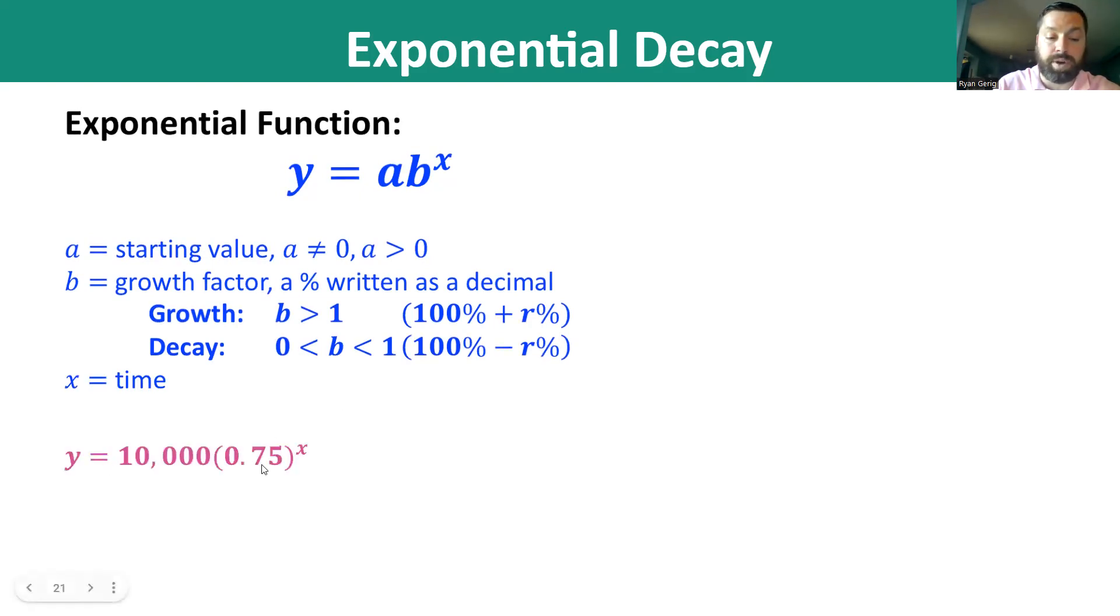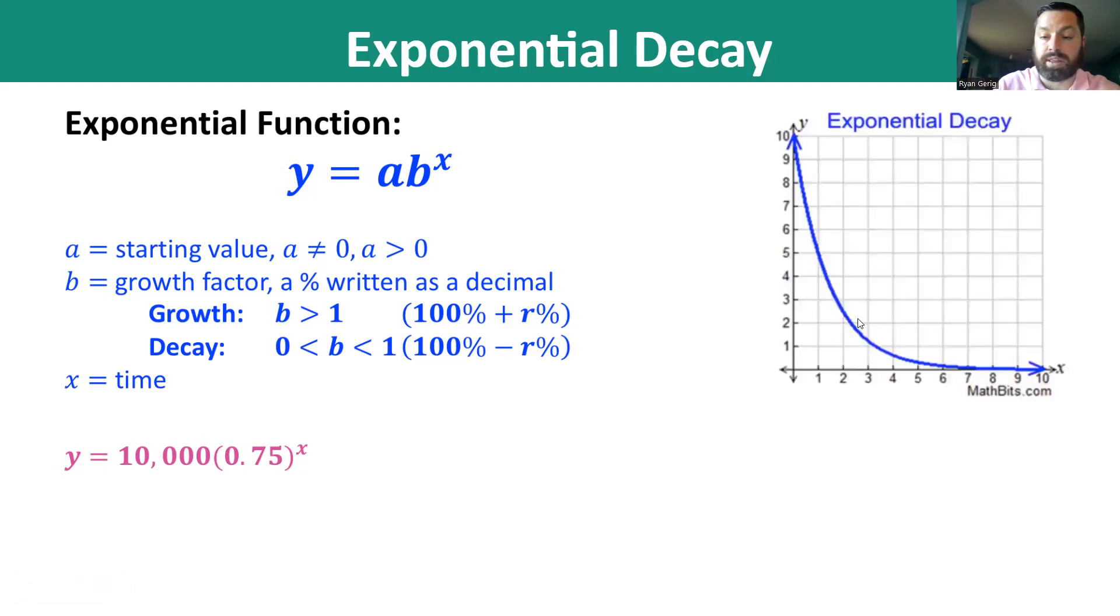So this is an example of what an equation would look like. See how 0.75 is between 0 and 1? That shows me that this is a decay function, and it'll look like this.